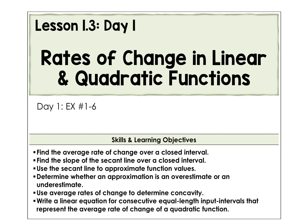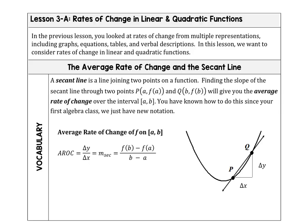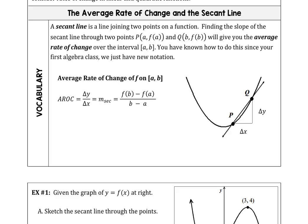Hello, it's Ms. Adams from Flamingo Math. In Lesson 3, Day 1, we're going to look at rates of change in linear and quadratic functions. Before we get into the lesson, let's talk about the idea of a secant line. It's a line that joins two points on a function, and you can see that secant line PQ in this image on our notes. Notice that the average rate of change is the slope, which creates that secant line PQ.